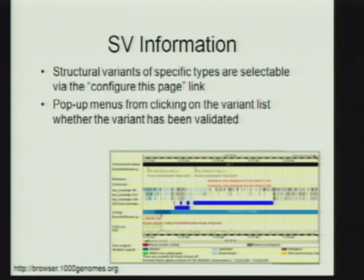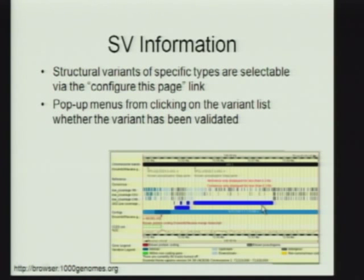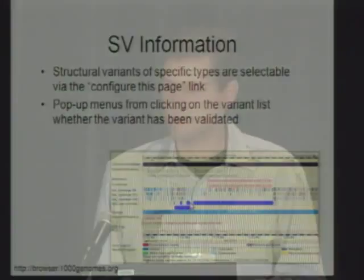We also have structural variant information. The structural variants are, as you saw earlier, in different tracks for different types of structural variants, selectable again via the 'Configure This Page' link. Once the structural variants are showing, here's an example of a larger deletion on chromosome one. If you click on it, it will give you some information on the validation status of that structural variant. You may also notice that this structural variant is actually associated with no SNPs whatsoever in the East Asian population — so things kind of tie together. That's actually a deletion.